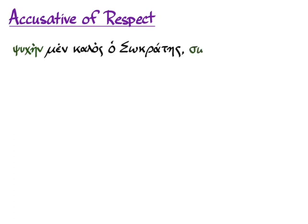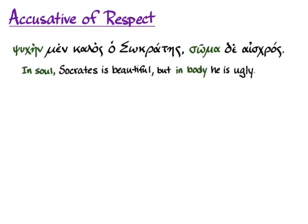The accusative of respect simply tells you in what respect or limited to what issue a particular thing is true. So for example, "Psychein men kalos Hosokrates soma de iskros" means in soul Socrates is beautiful, but in body he is ugly.